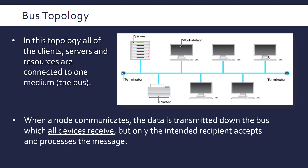Say this computer wanted to print something — it will send a message along the bus, and all the devices will receive the message, but only the printer will process it, because the packet containing the data has got an address to the printer. So only the printer will actually accept and process the message, but all the devices can see it because it's transmitting down this common wire. To stop the messages from bouncing back and forth, we have terminators at either end — essentially a resistor which absorbs the electrical signal to stop it clogging up the network.